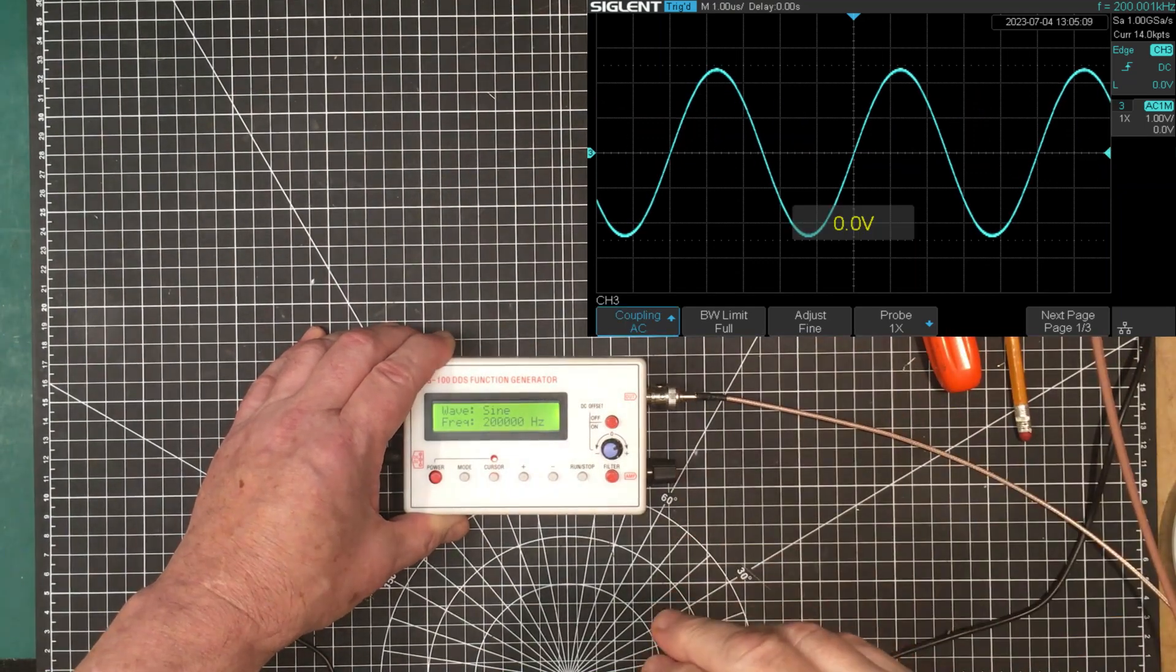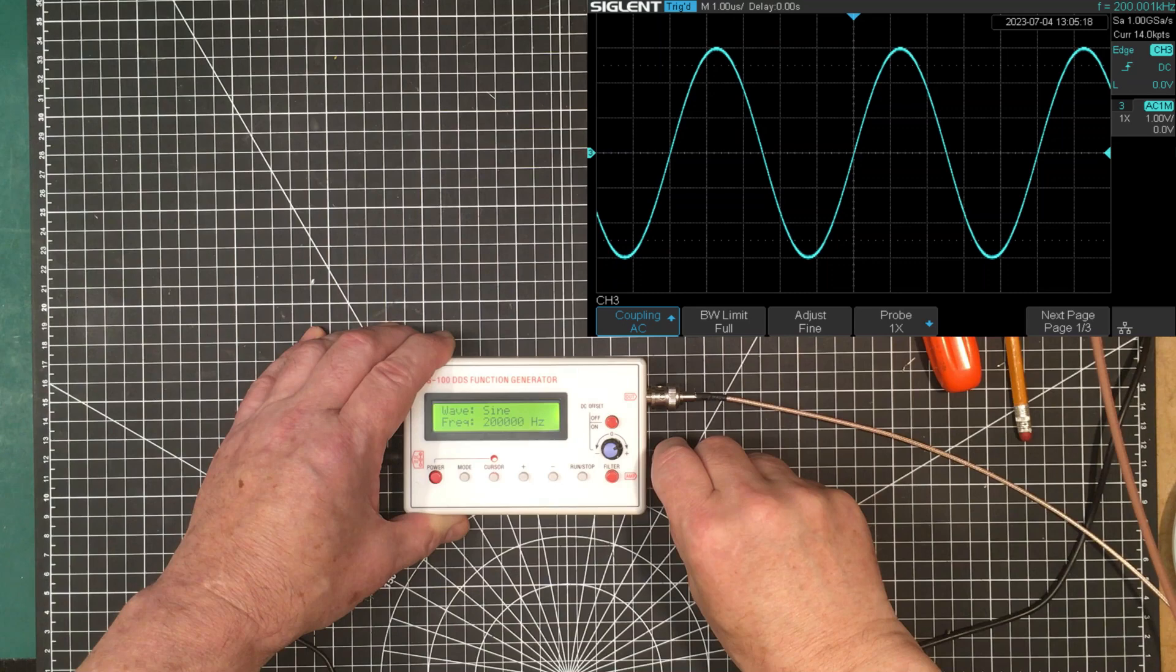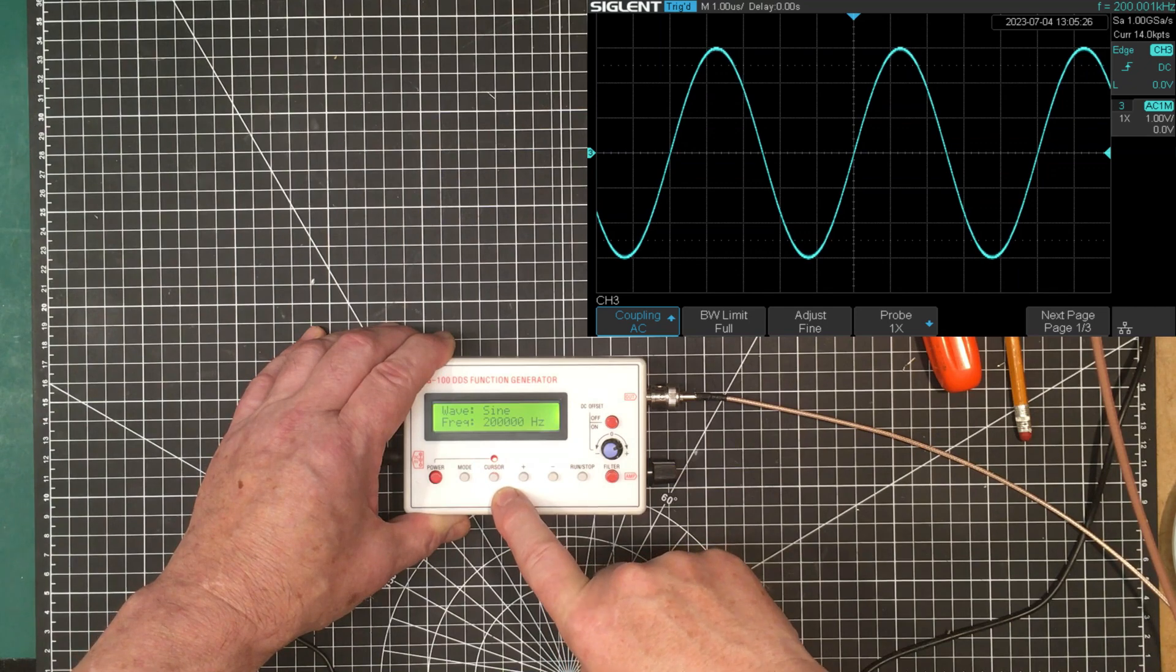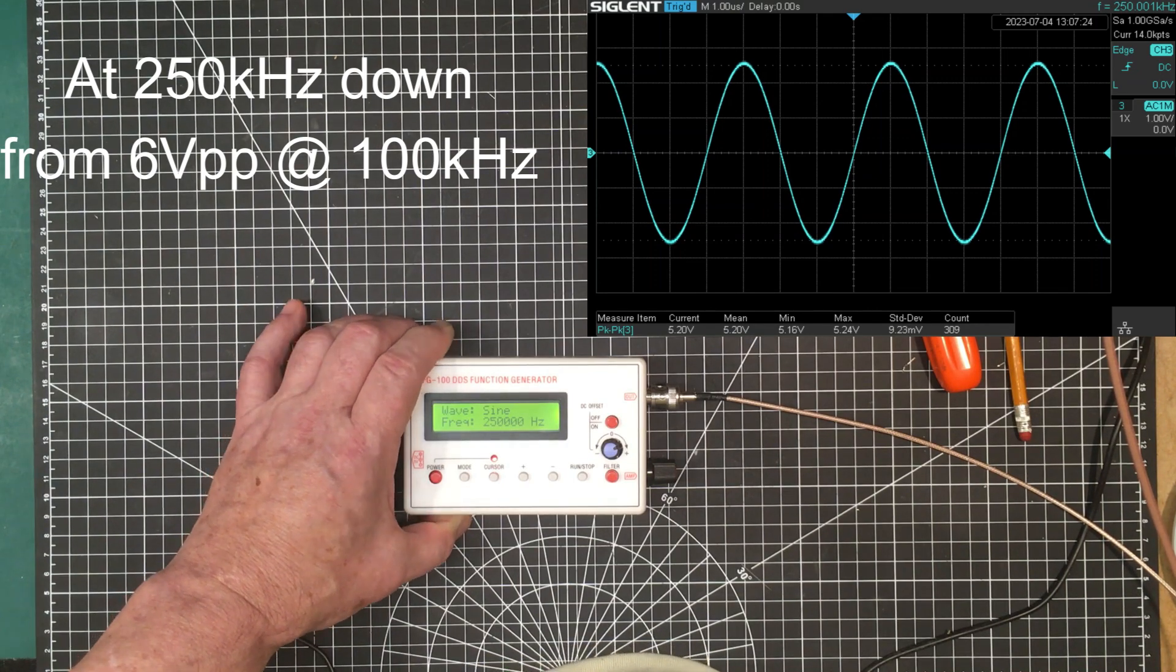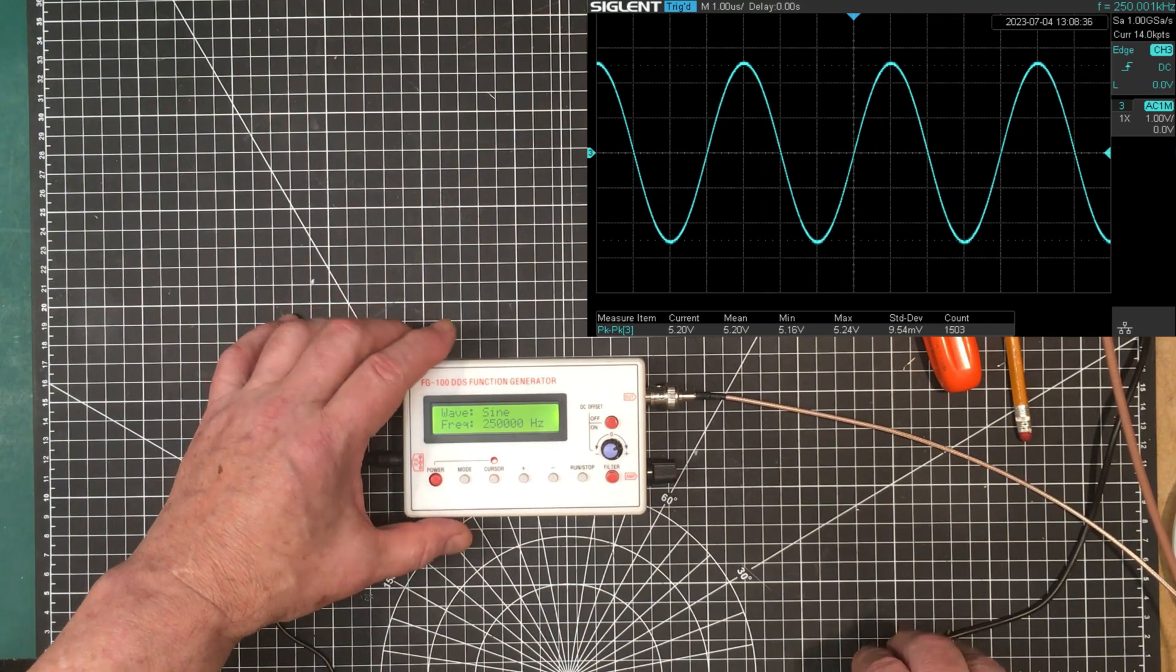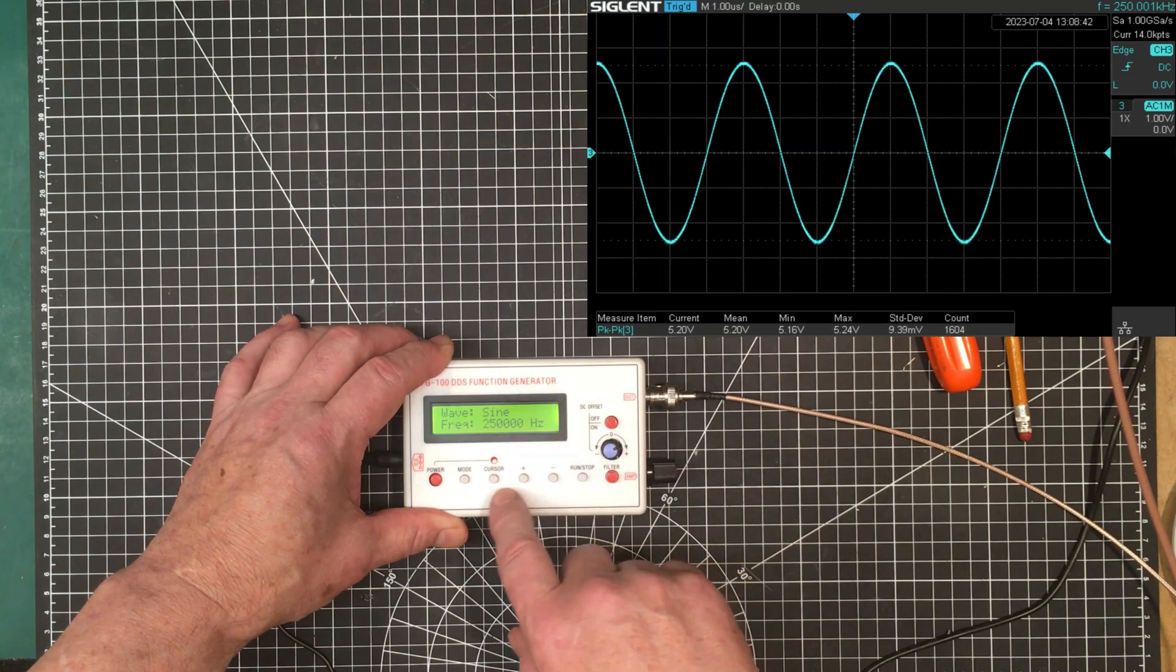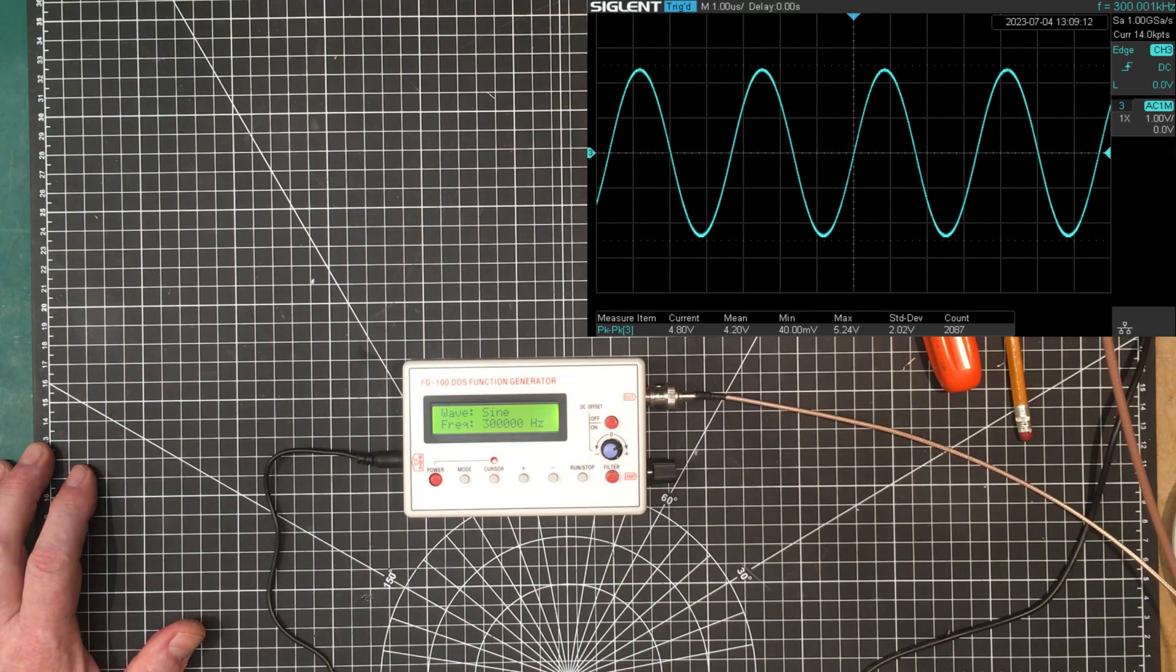Let's adjust this for that amplitude. We're at one times probe, one volt, so we're running at six volts peak to peak here. So we've dropped down to 5.2 volts peak to peak, so we're still within 3dB. At 3dB we've got 4.2 volts. Let's see how much higher we can go. We've got a pretty decent sine wave there still. I'm gonna try it at 350 kilohertz. Let's go to 300. Okay 300 kilohertz we're at 4.8, so we're still within 3dB of the six and we've still got a pretty decent sine wave.